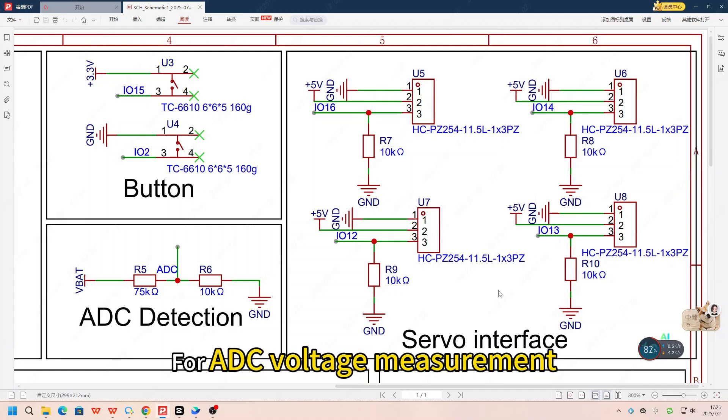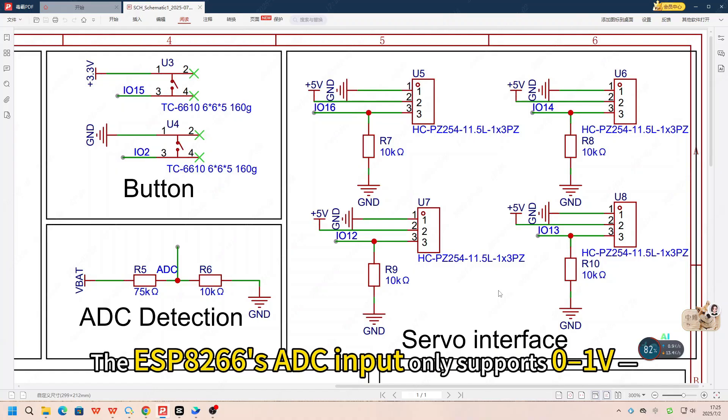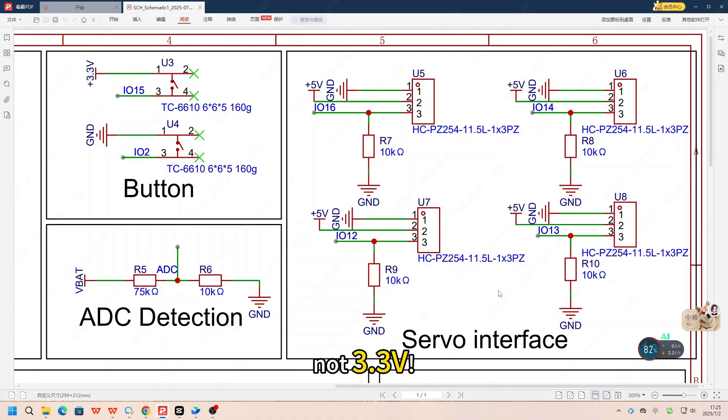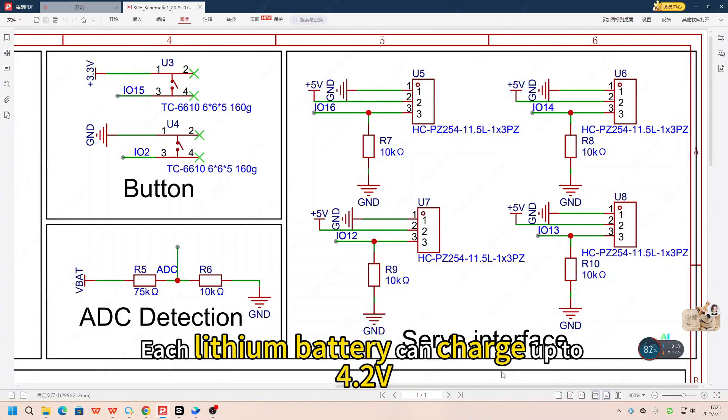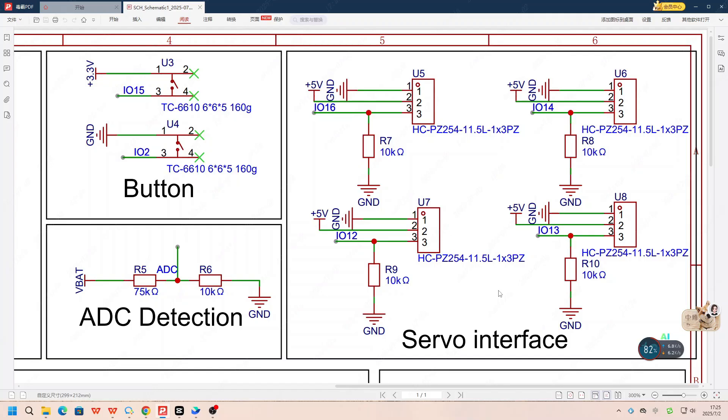For ADC voltage measurement, there's something important to note. The ESP8266 ADC input only supports 0 to 1V, not 3.3V. Each lithium battery can charge up to 4.2V, so two in series gives 8.4V at full charge.